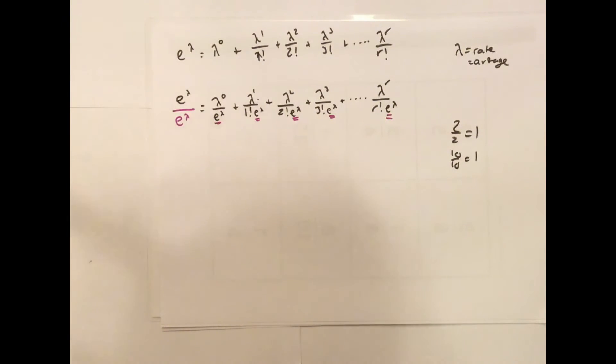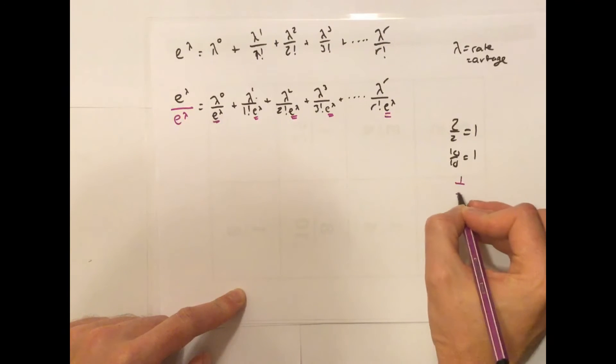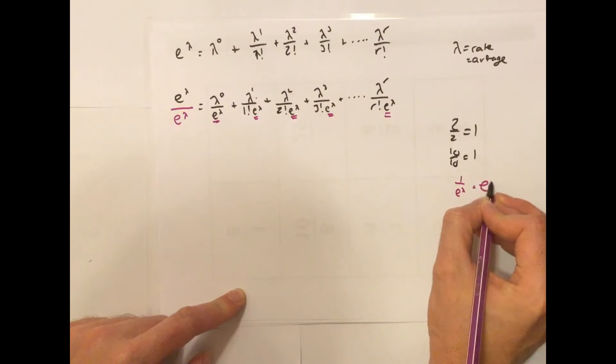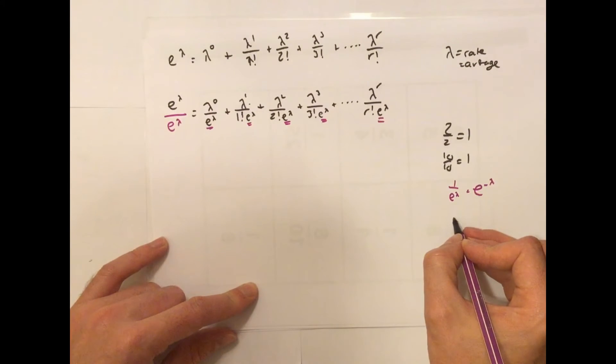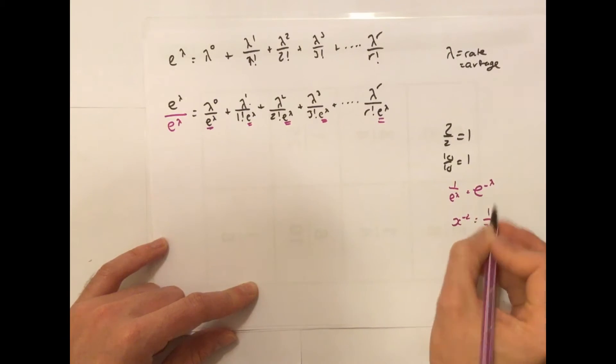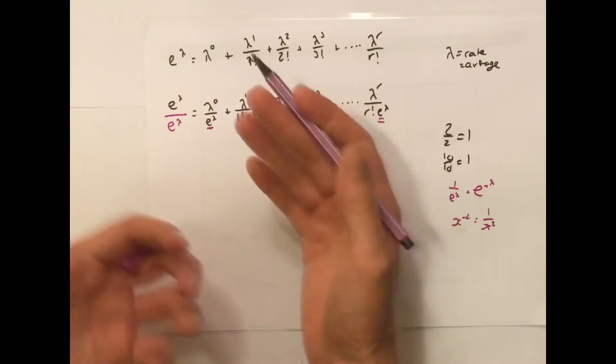Now, removing your indices skills, you can write 1 over e^λ as e to a negative power. Just like you had x^-2 is the same as 1 over x squared. That minus sign means it's 1 over something.